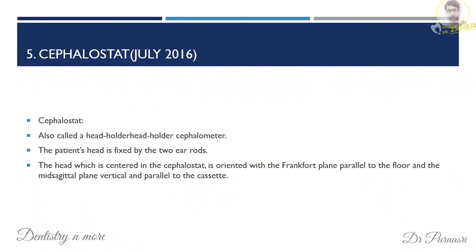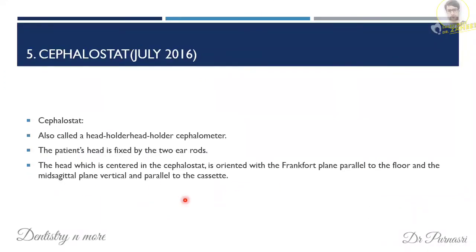The Cephalostat is also called a head holder or cephalometer. It holds the patient's head using two fixed ear rods; the head is centered in the cephalostat and oriented parallel to the Frankfort horizontal plane. The mid-sagittal plane is vertical and parallel to the cassette.